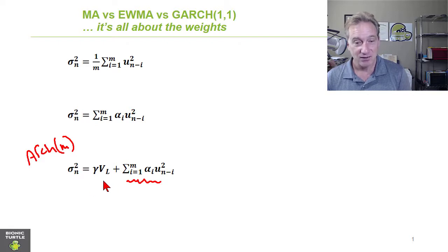But we add a term that gives some weight, denoted by gamma, to a long-run variance or unconditional variance. And so, as I like to say, this is the long-run variance to which this series is experiencing a gravitational pull.